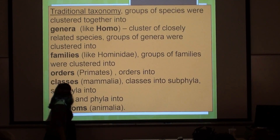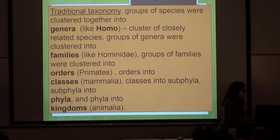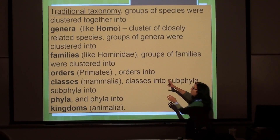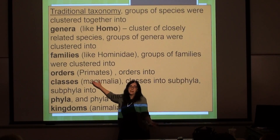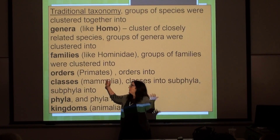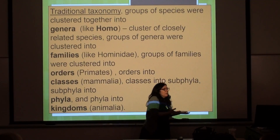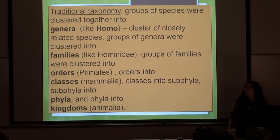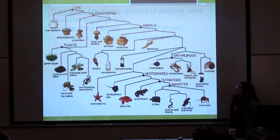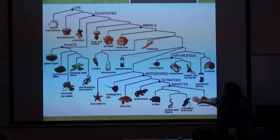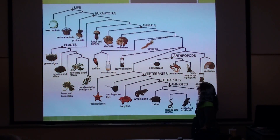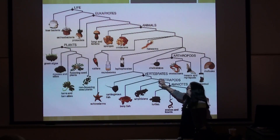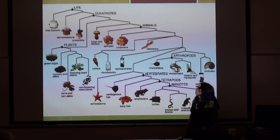And then your phyla and your kingdom and Mammalia. So in cladistics, you can break these down into smaller and smaller clades. Each one of these groupings is actually a clade. A genus is a clade, a family is a clade, because at every level you have common ancestors of all the descendants and members of that group. So this is a clade of mammals, and this is a clade that includes the mammals and the tetrapods, and this is a clade of vertebrates and so forth.